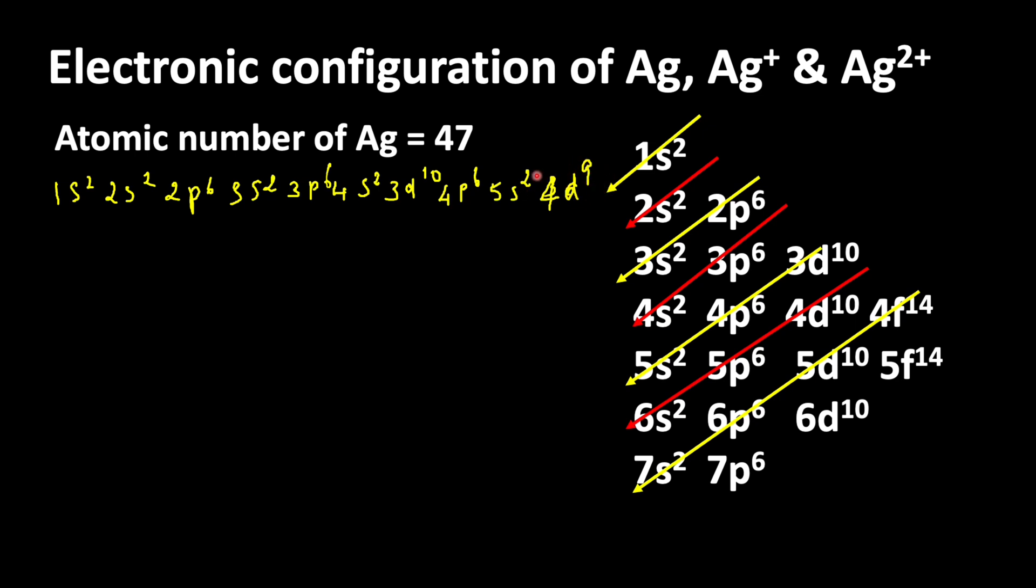This kind of exchange is possible because in d block elements, n minus 1 d orbital and ns orbital have very small energy difference. So let us change the electronic configuration.